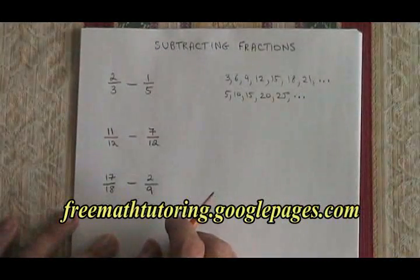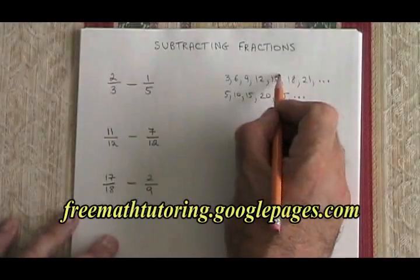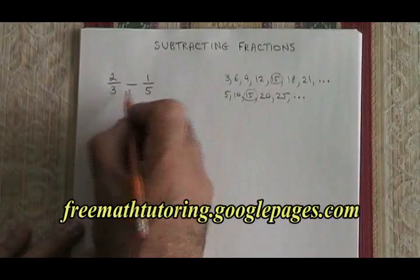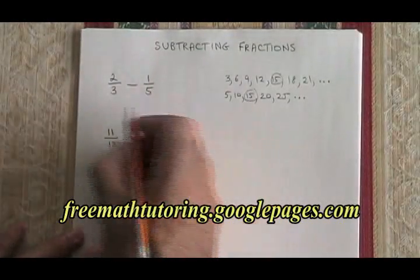I look for the lowest number that's in both lists, which in this case is the 15. So I want to convert 2 thirds and 1 fifth into fractions over 15.